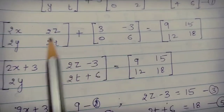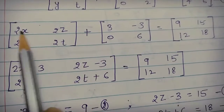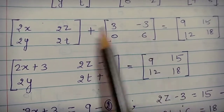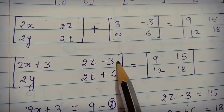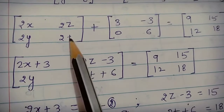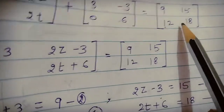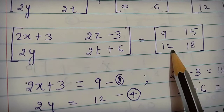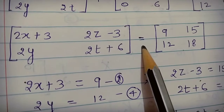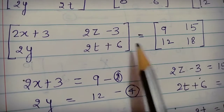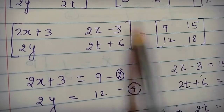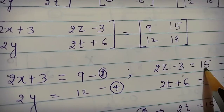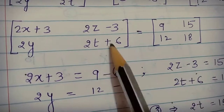On the left-hand side we add two matrices, and since the addition of two matrices equals the addition of corresponding elements, we get: 2x plus 3, 2z minus 3, 2y plus 0 which is 2y, and 2t plus 6. The right-hand side remains the same. We now equate the two matrices, and since two matrices are equal if and only if their corresponding elements are equal, we set up four equations.